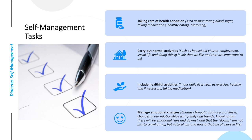Number two: carry out normal activities, such as household chores, employment, and social life. Doing the things in life that we like and that are important to us. This may mean changing the way we do things — for example, having prepared dinners in the freezer for times we are not feeling up to cooking.